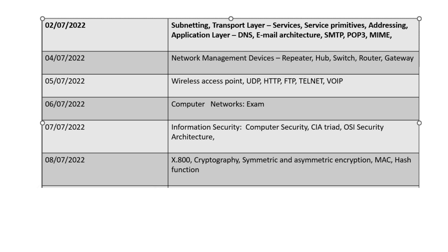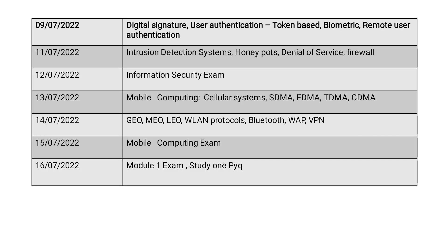The information security section covers computer security, OSI security architecture, symmetric and asymmetric encryption, MAC, hash functions, digital signature, user authentication, remote user authentication, intrusion detection systems, honeypot, and firewall.